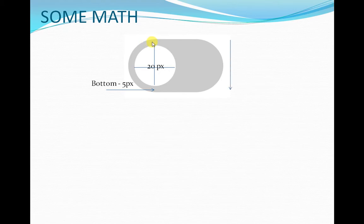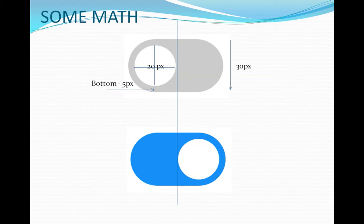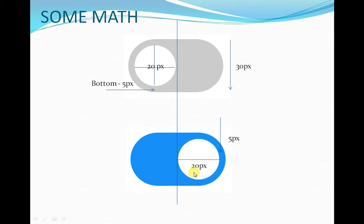So the height is going to be 30 pixels for my switch. Next, if I want to have this kind of effect and I want to translate it in the x direction, it will move by 20 pixels. So I need to figure out the width of the slider. If I have a margin of 5 pixels, shifting it by 5 pixels, so 5 plus 20 is 25, again this 20 which is 45, and this 5 — the width is going to be 50 pixels.